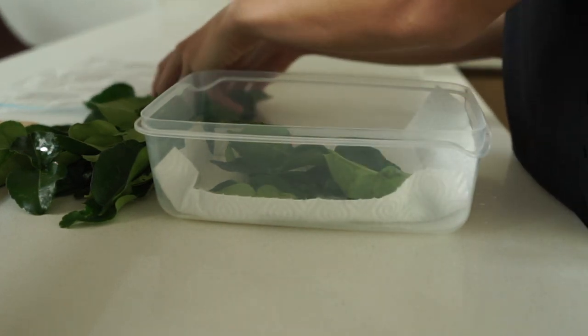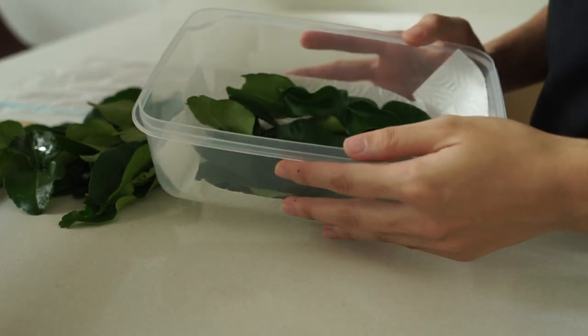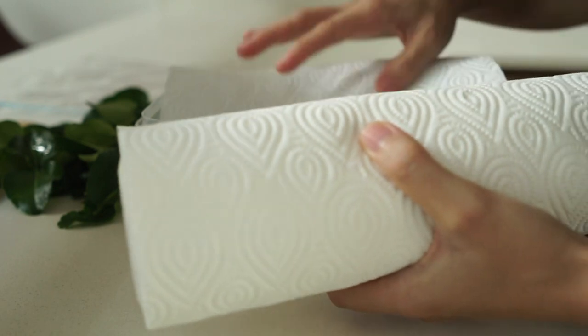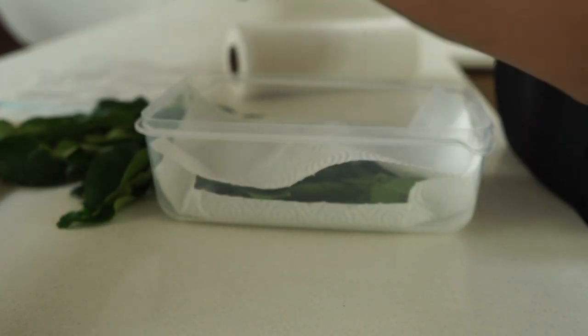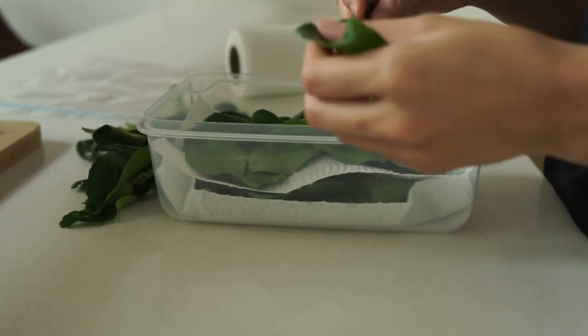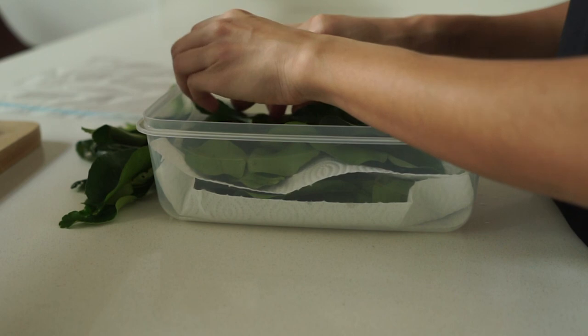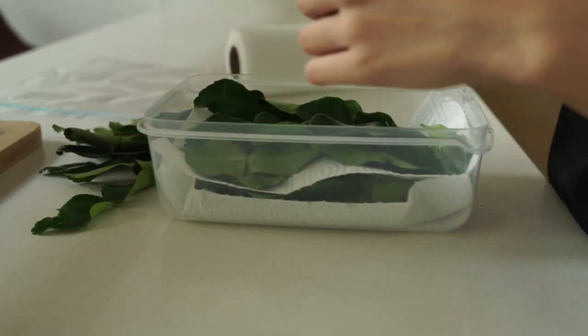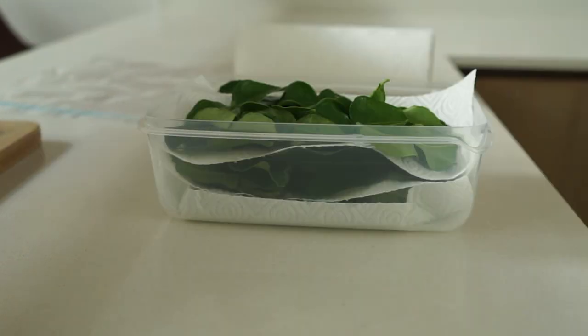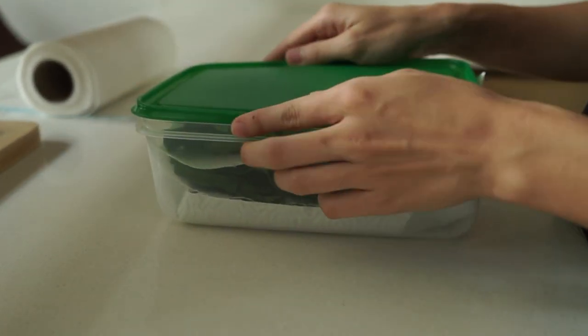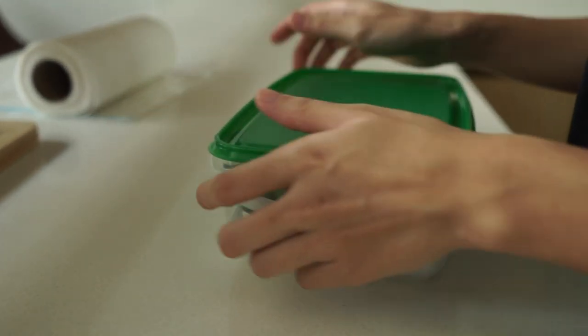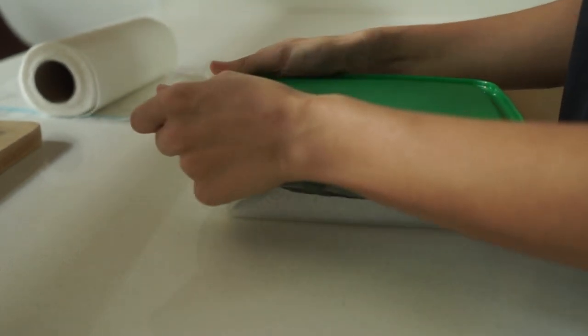Don't overcrowd them, not more than two layers on top of each other. Then you can put another paper towel and do the same thing. This method will keep the leaves fresh so they won't go soggy or dried out. When you're done you can just close the lid and store in the fridge in the vegetable section and they will be good for at least a week or two.